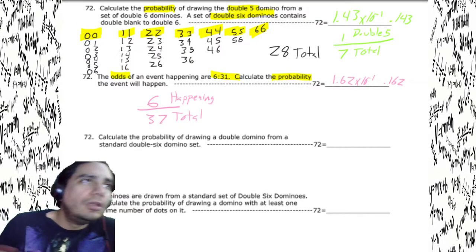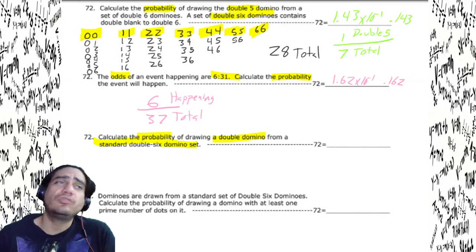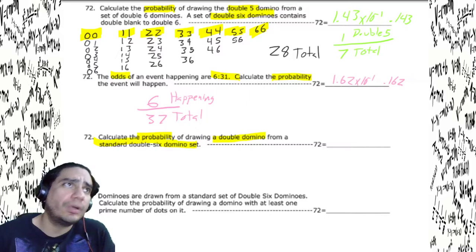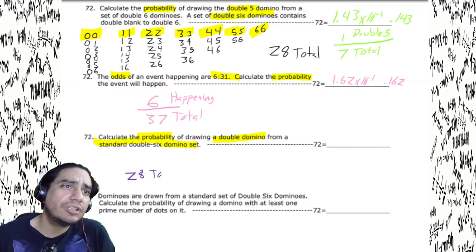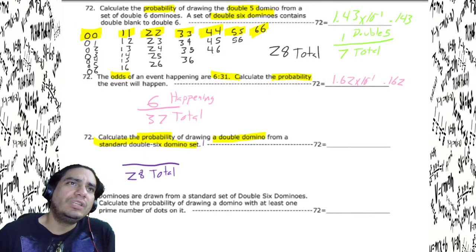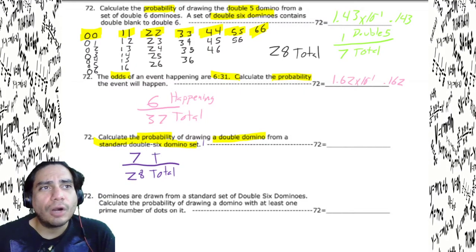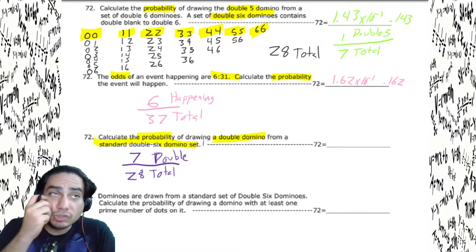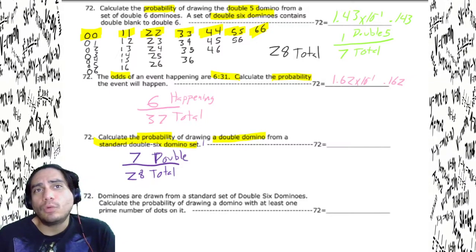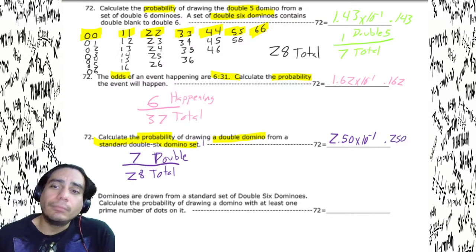Calculate the probability of drawing a double domino from a standard double-six domino set. We know there are 28 total dominoes and seven doubles — one for each value from blank to six. Since it's probability, the denominator is the total, which is 28. Seven divided by 28 gives 2.50 times 10 to the negative first, or 0.250.